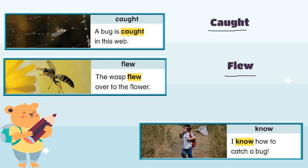The word 'flew' is the past tense of the verb 'fly.' The third word is 'know.' I know how to catch a bug. This kid is going to catch a bug. The word 'know' has a silent K. Do you remember the silent visit of Mr. K?